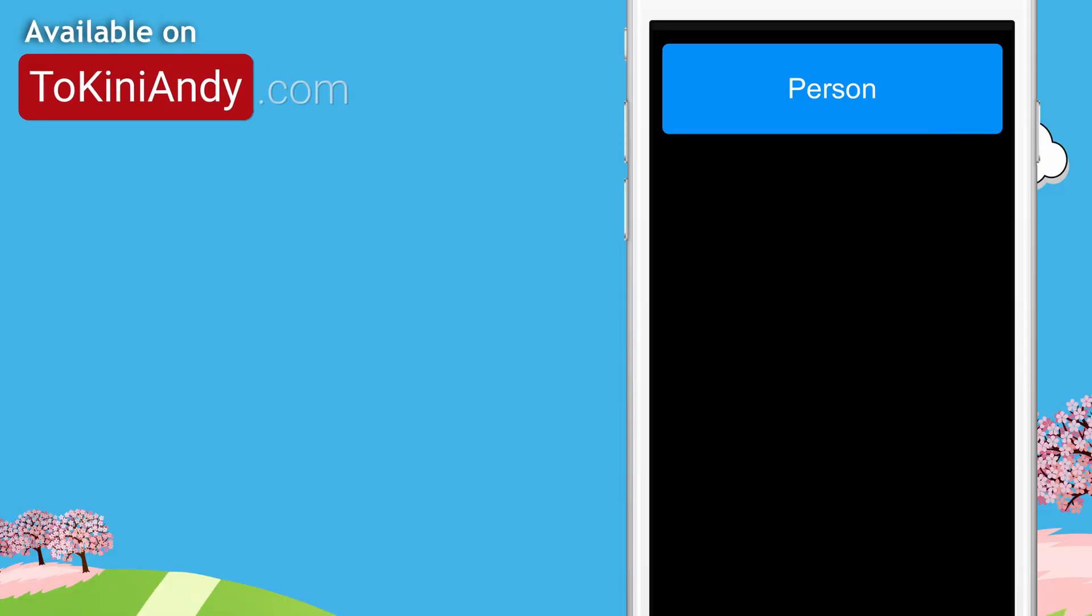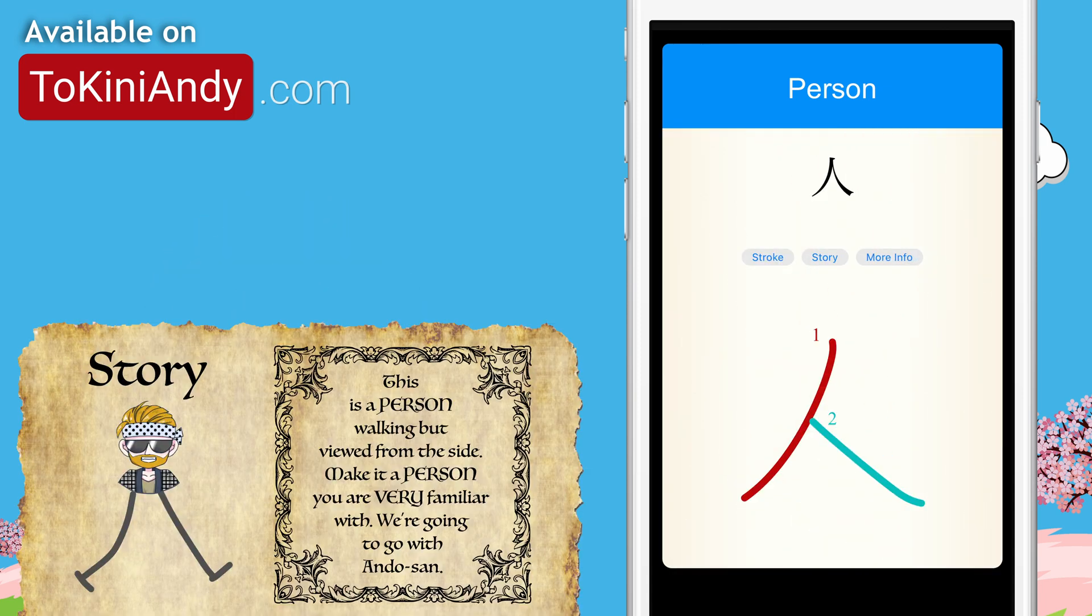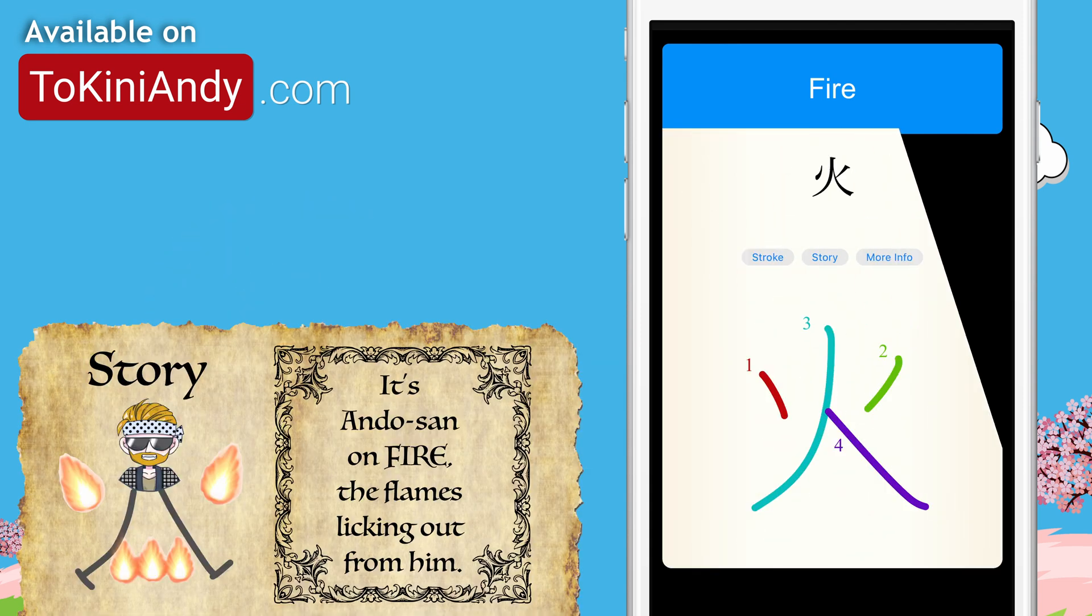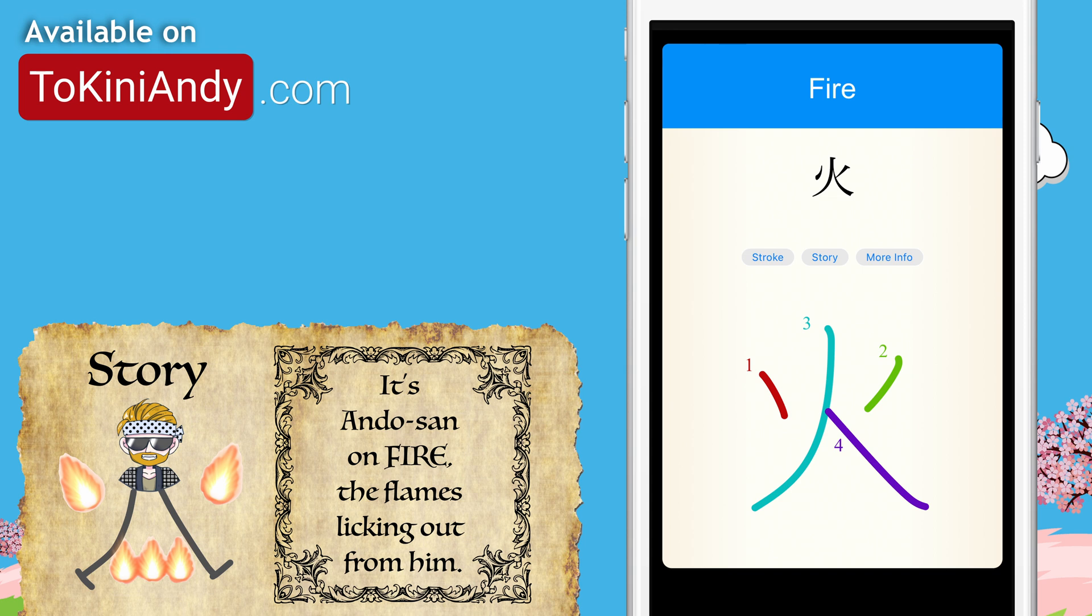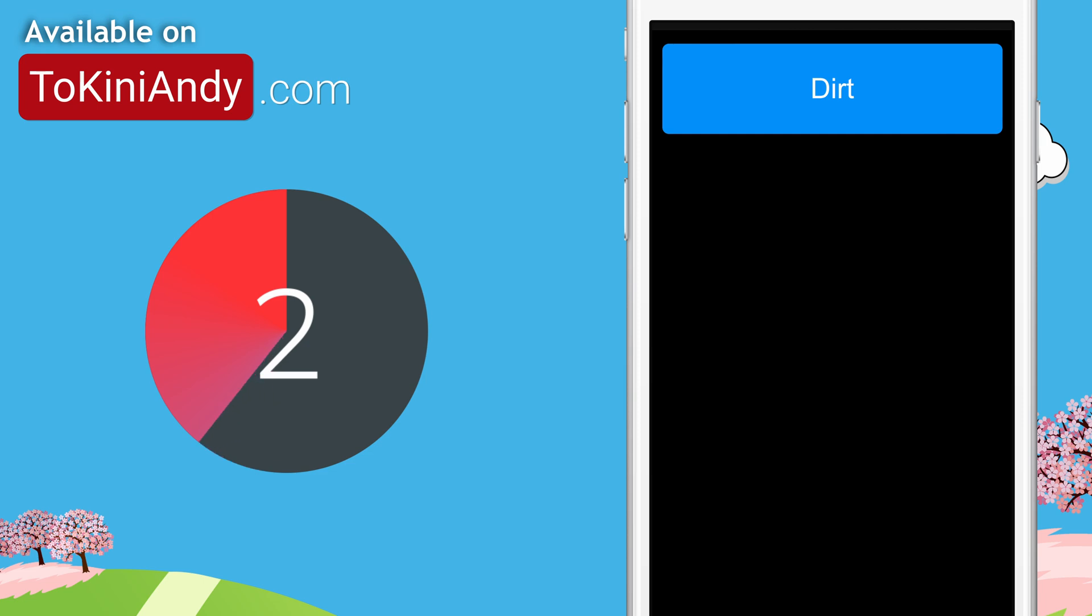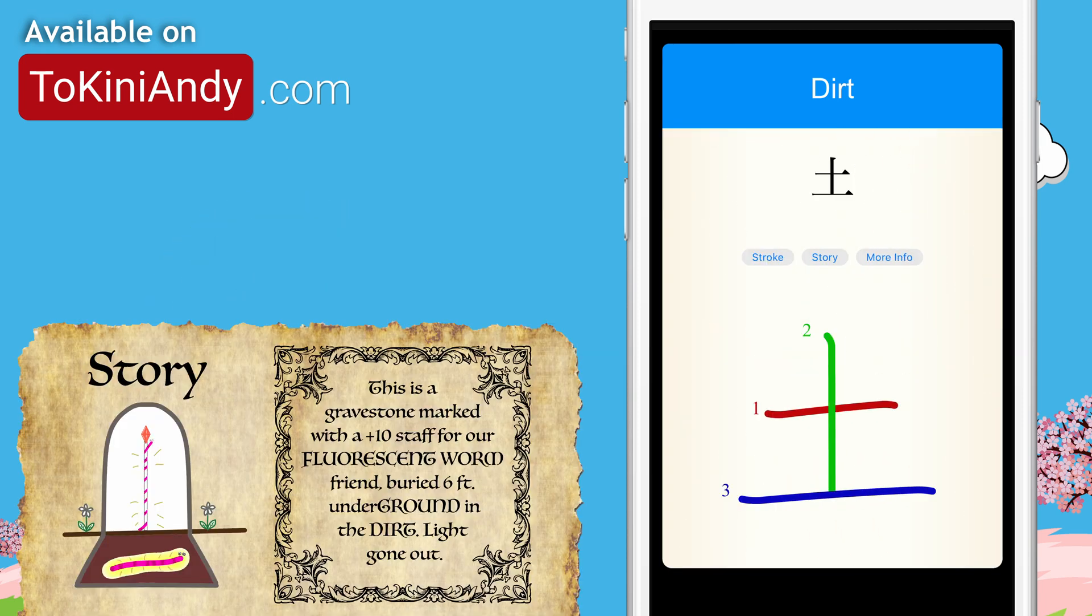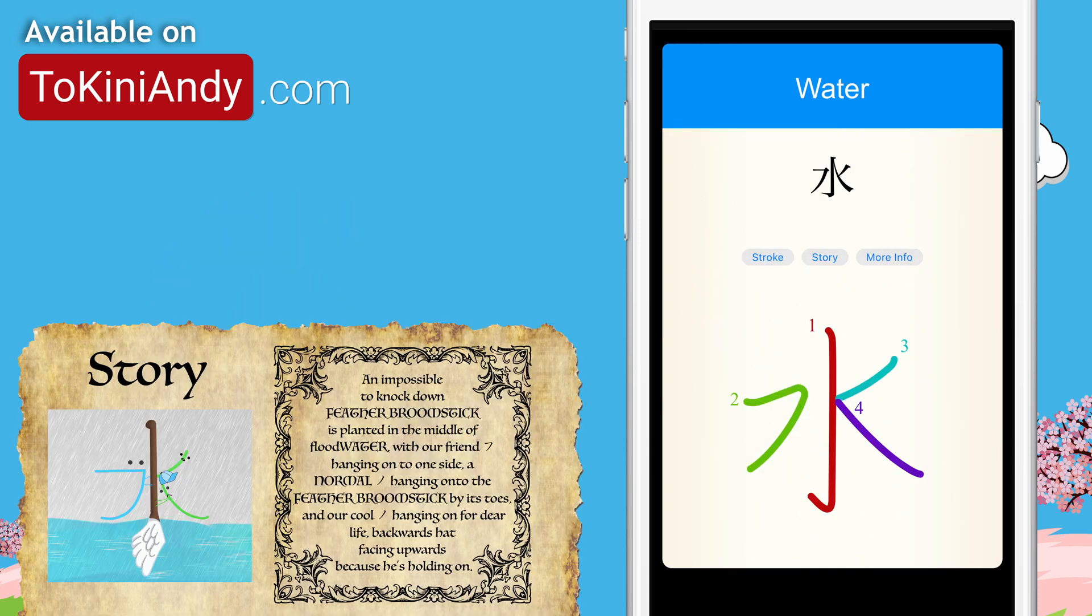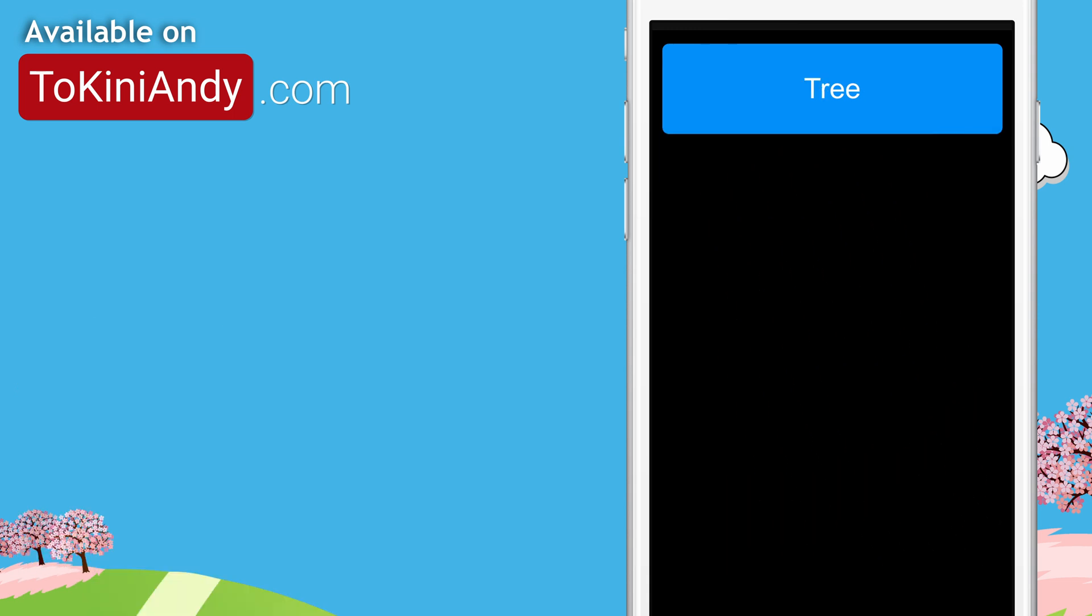Our first card is person. Next is fire. Just a few more. Here's dirt. Then there's water. Finally, we have tree.